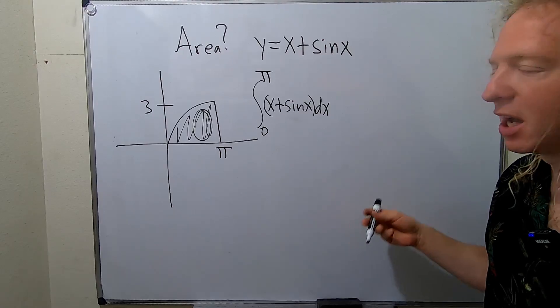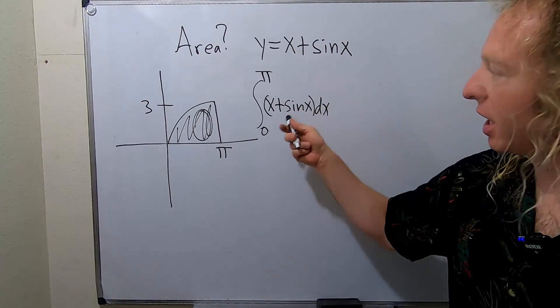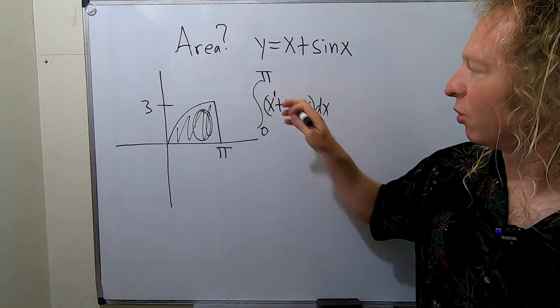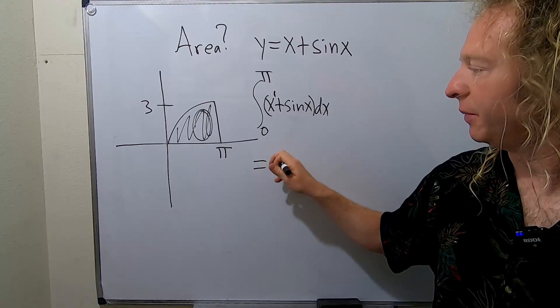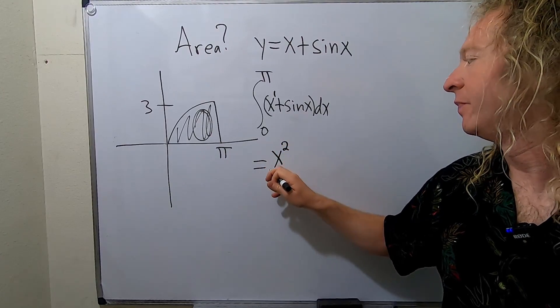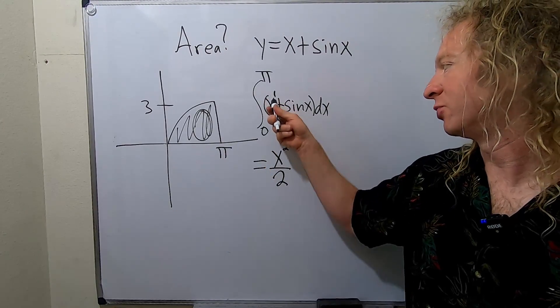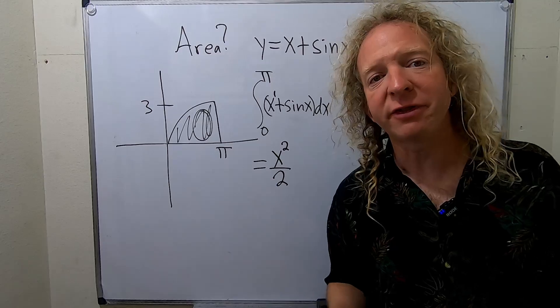All right so all we have to do now is integrate this. To integrate x we use the power rule. There's a 1 here so this is simply x squared because you add 1 and then divide by 2. So 1 plus 1 is 2 then you divide by that.